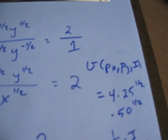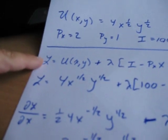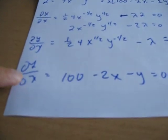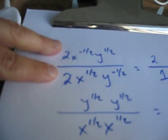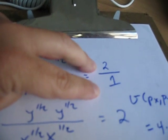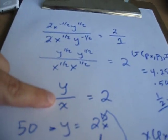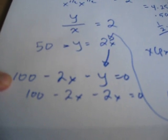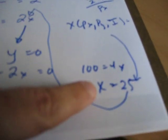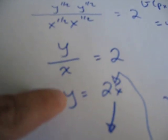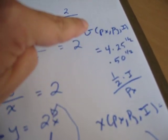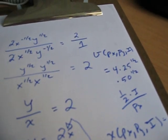Same steps every single time. Write out the Lagrangian. First order condition for x. First order condition for y. First order condition for lambda. Ratio of marginal utilities equals ratio of prices. Solve for x as a function of y or vice versa. Plug that into the budget constraint. That gives you one of your demands. Take that back, that will give you your other demand. Take your two demands, plug them into the utility function. That gives you indirect utility.